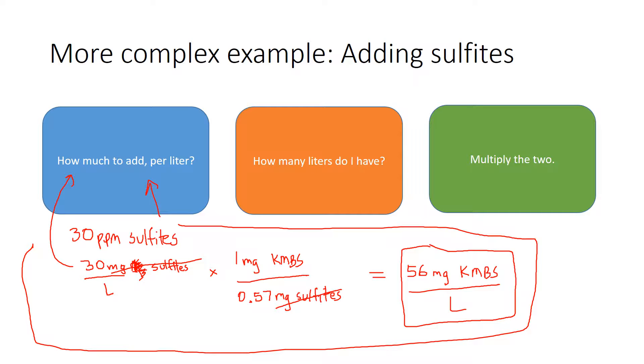So now I've got how much to add per liter in potassium metabisulfite, which is what I'll actually add. So if I add 56 milligrams of potassium metabisulfite per liter, that gets me 30 parts per million or 30 milligrams per liter of sulfites themselves. And we'll talk about what potassium metabisulfite is and how it becomes sulfites. But for now, just think in terms of one milligram of potassium metabisulfite becomes 0.57 milligrams of sulfites. And all this is, is applying that conversion factor. And then you can go ahead now that we've got how much to add per liter and go ahead and do the rest of our formula.